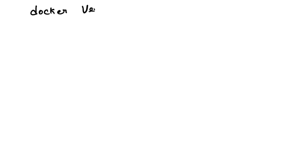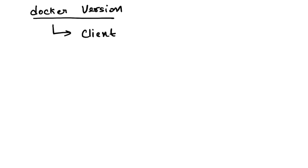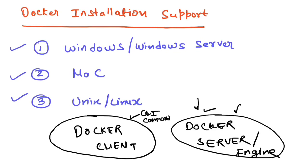There is a CLI command called 'docker version'. Once you have installed Docker, if you run 'docker version', you will get two things: the client version and the server version — showing what version of each is installed on your system.